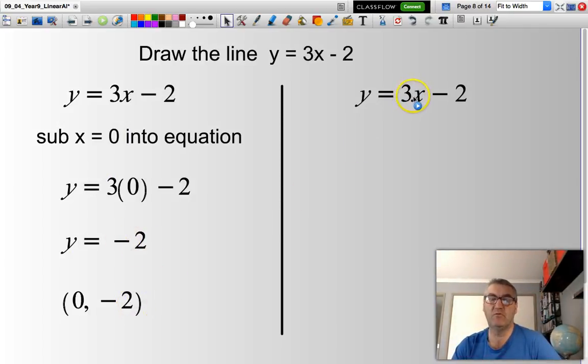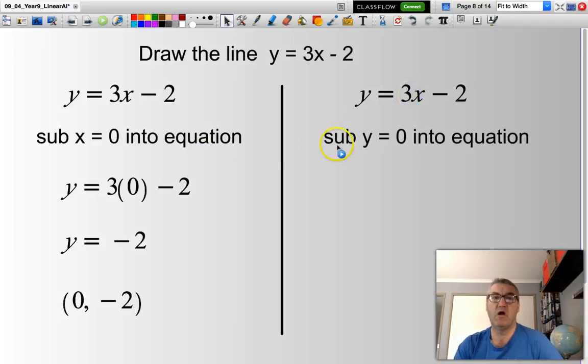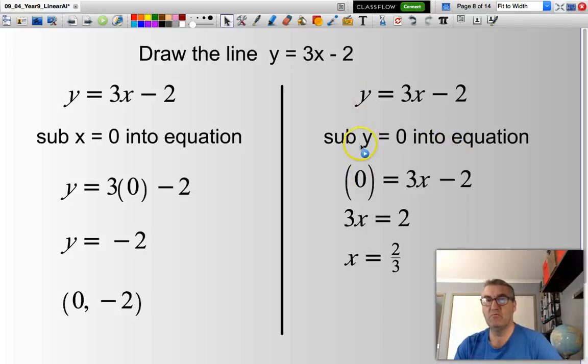Let's go and look at the next one. This time, I will substitute y = 0 into this equation. Therefore, the 0 will appear where the y is, 0 = 3x - 2.